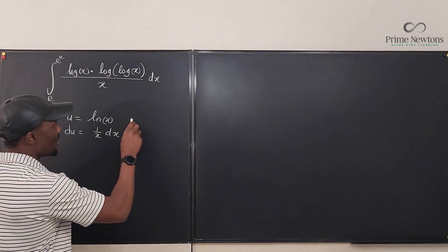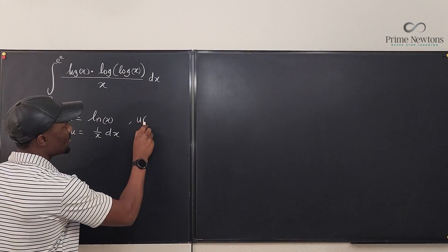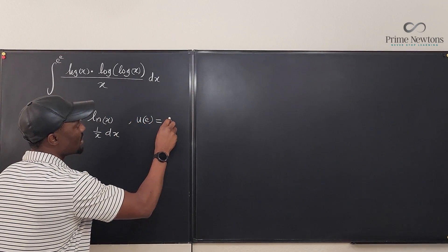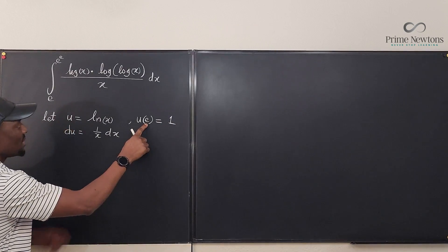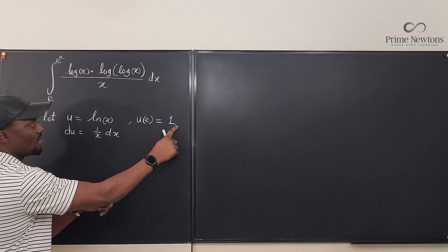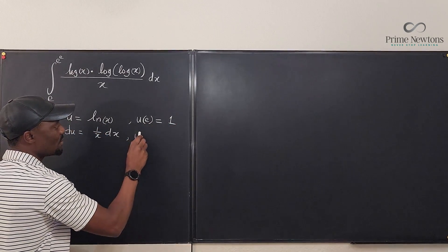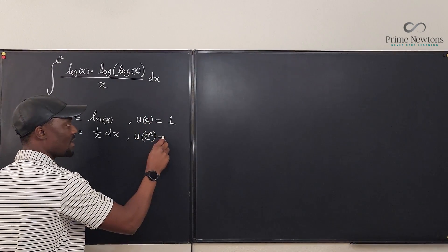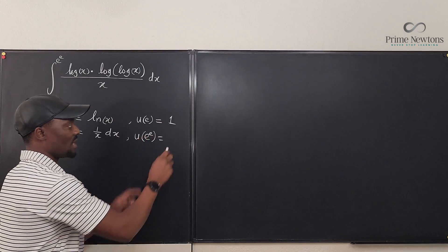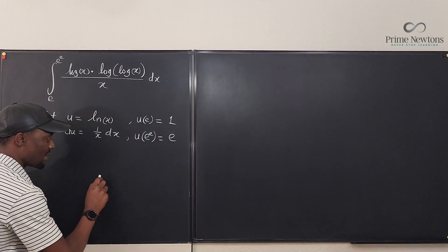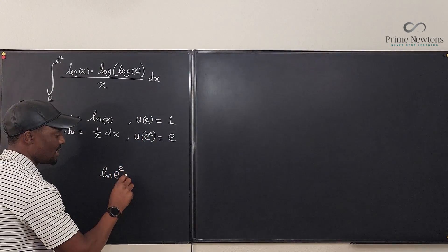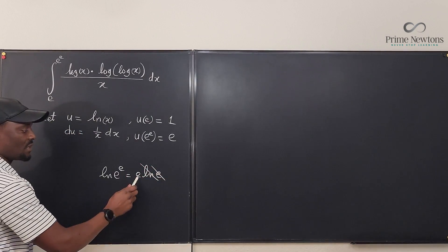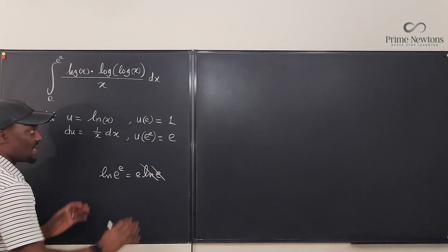Now let's evaluate the new bounds. If we evaluate u at x = e, we get ln(e) = 1. If we evaluate u at x = e^e, we get ln(e^e) = e·ln(e) = e·1 = e. So the new bounds go from 1 to e.